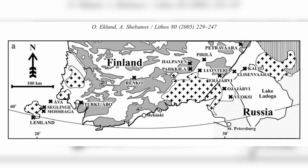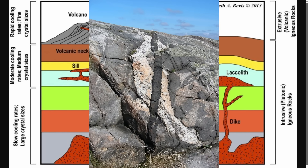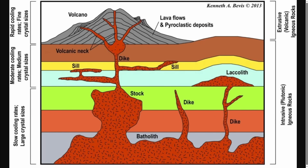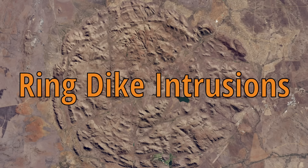So what actually are these features? They are known as igneous intrusions — also known as a pluton — which is when magma intrudes on weaknesses within rocks and then solidifies, creating regions within the older rock of newer igneous rock. There are a variety of different types of igneous intrusions, such as batholith intrusions, stock intrusions, and dike intrusions. In the case of these ring formations, they are known as ring dike intrusions.